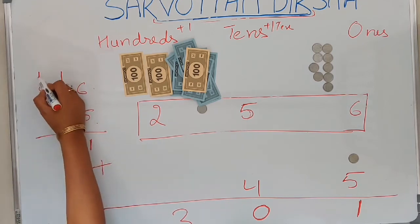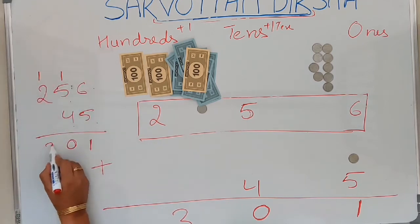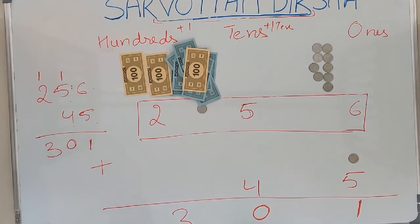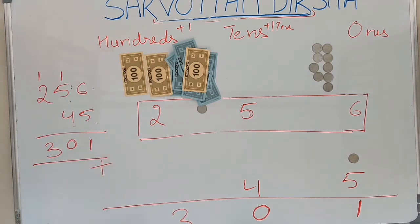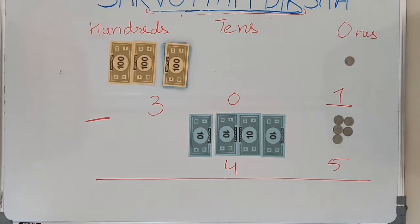So I got carry forward and I got the answer as 301. Now let us see the example of subtraction also with the same numbers. How does borrowing happen?